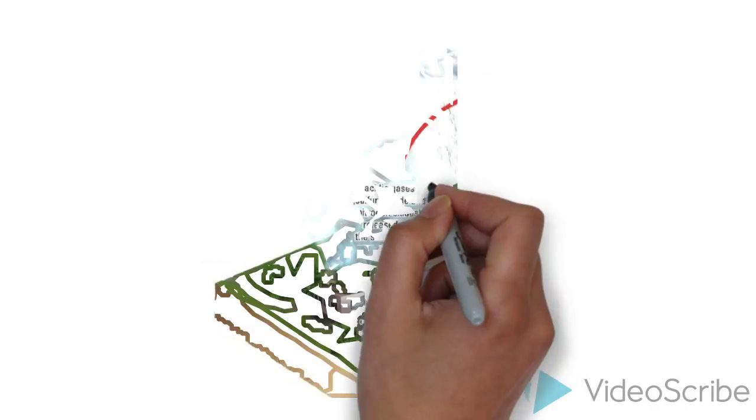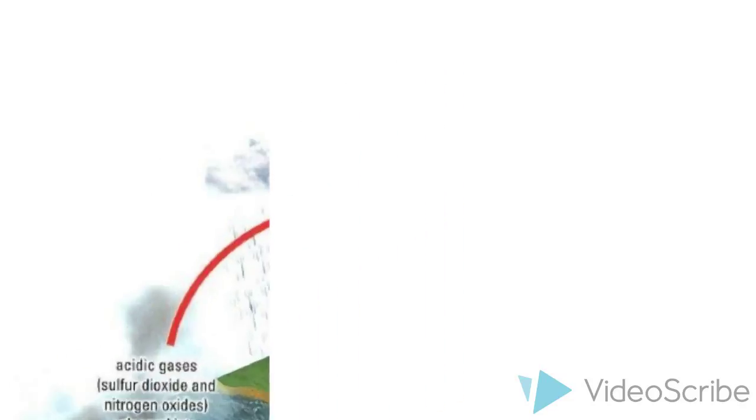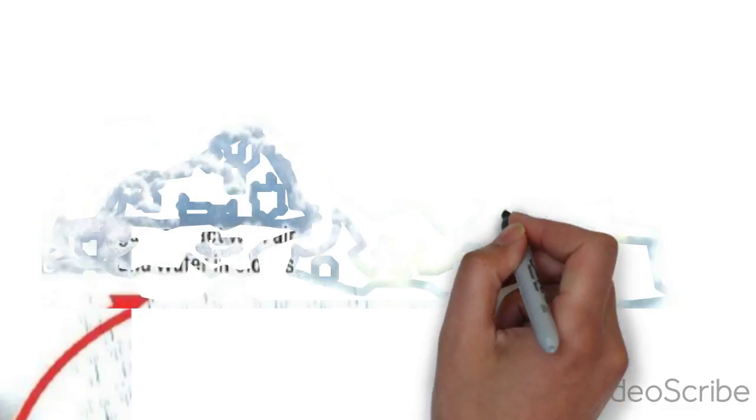Firstly, sulfur dioxide and nitrogen dioxide are produced when coal and petroleum are burnt in industries. As these two gases are acidic, they can react with oxygen and water in the atmosphere to form acids.